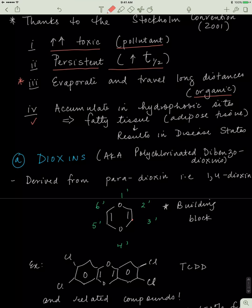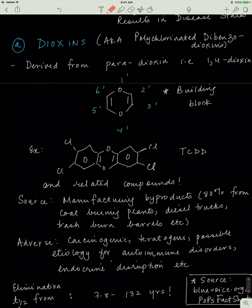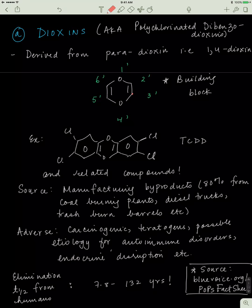So let's look at a few POPs. The first one is dioxins, or polychlorinated dibenzodioxins. Poly means many, chlorinated means there's a lot of chlorine atoms, dibenzo means there's two benzene rings, and dioxins is basically the building block.